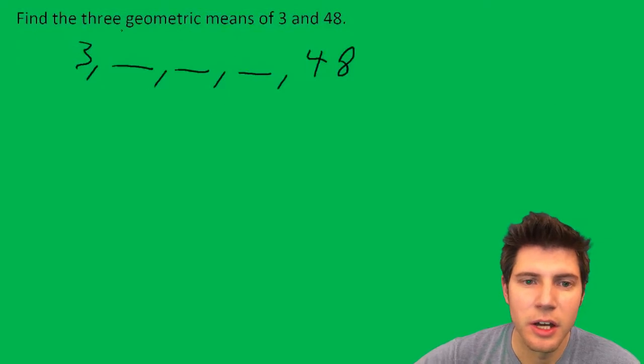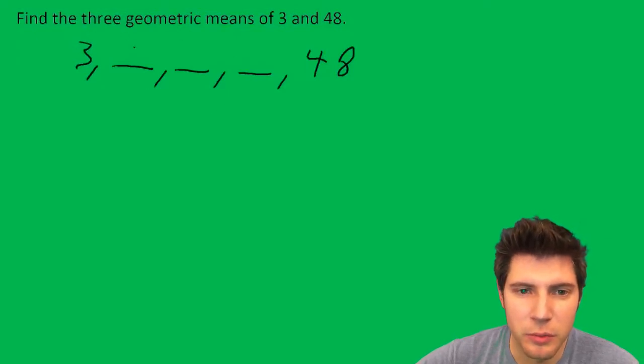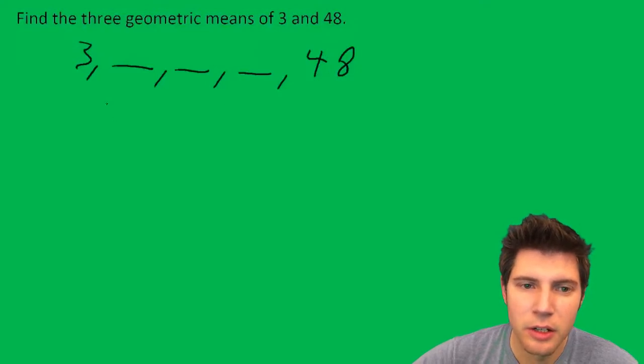These are the three numbers such that when you multiply by the same R, it'll bring you to 48. So this is our a sub 1, and this is our a sub 5.